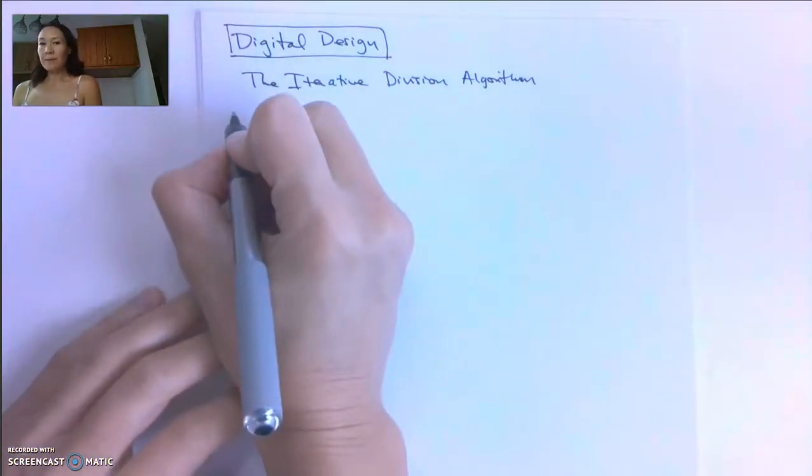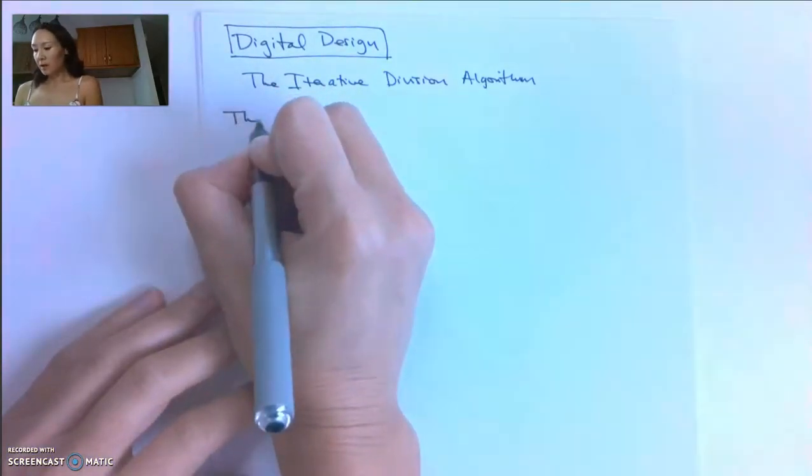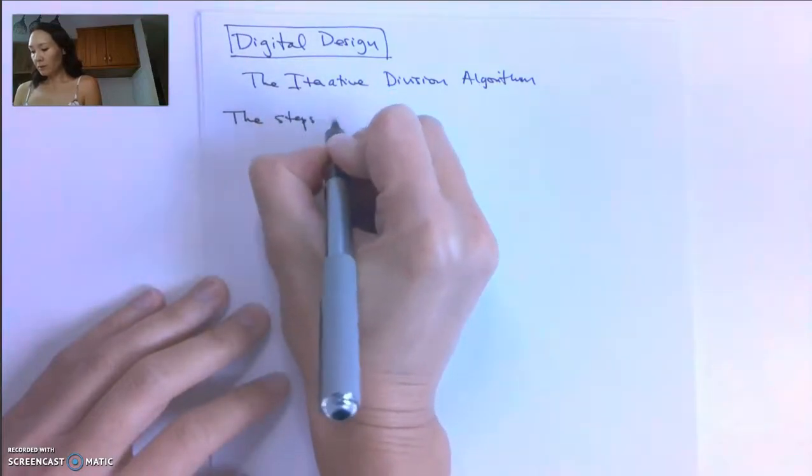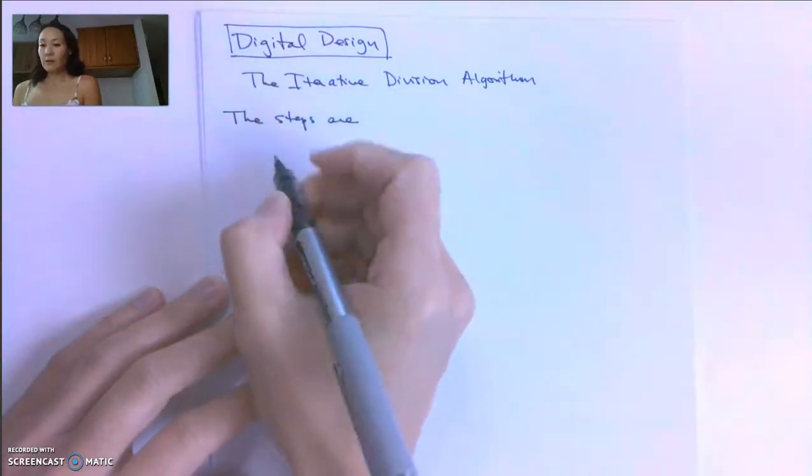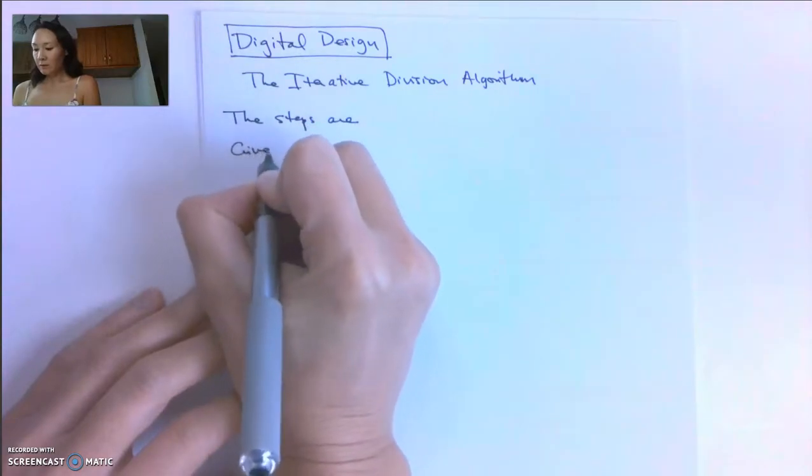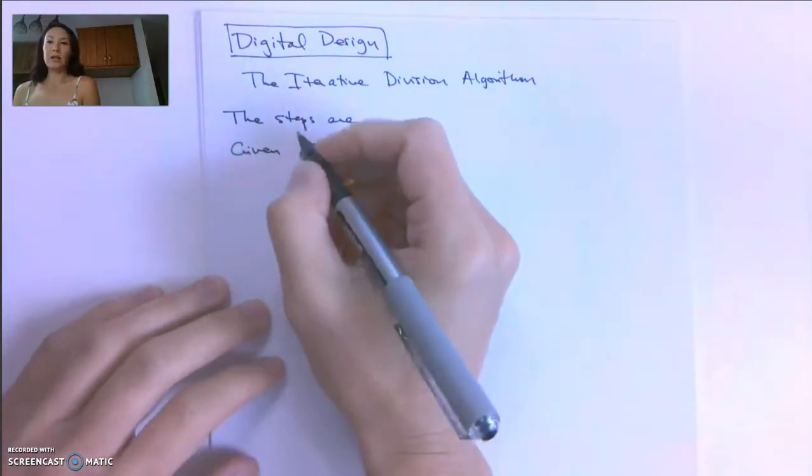Okay, so the steps of the division algorithm are this. First, given two integers, A and B,